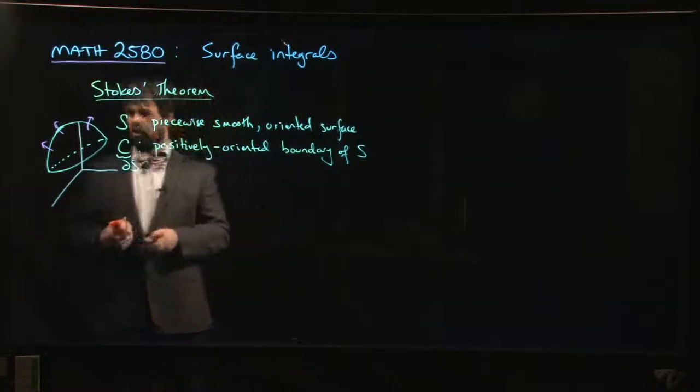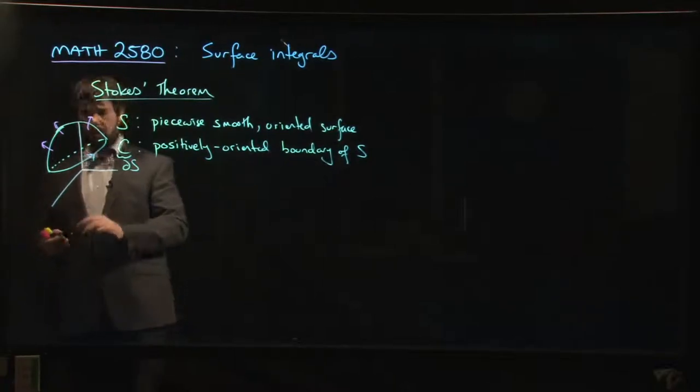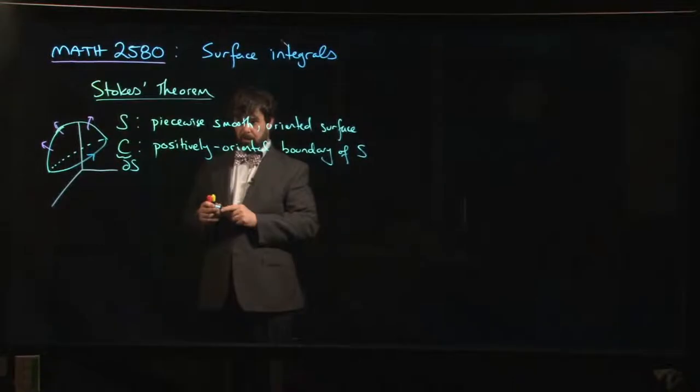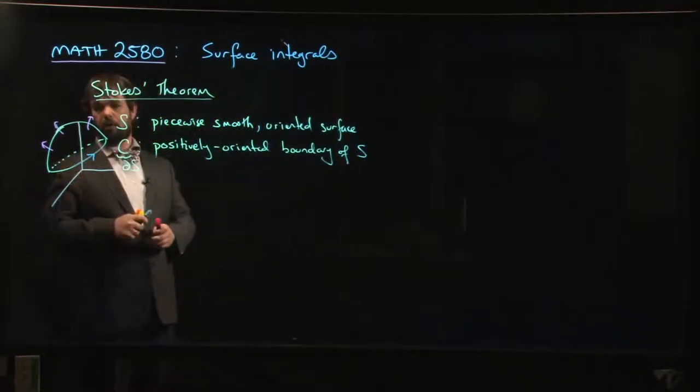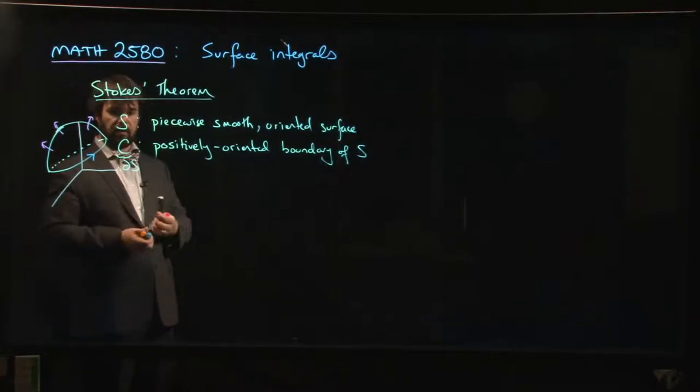So in the picture I've drawn here, that would have us going around that way. This way around the curve. It would be the positively oriented boundary. Of course if you reverse the orientation for the surface, you need to also reverse the orientation for the boundary curve. The two of them are kind of connected together.